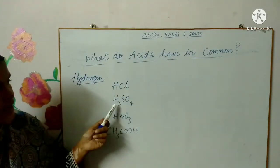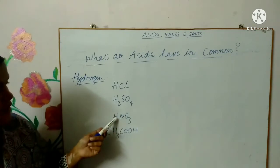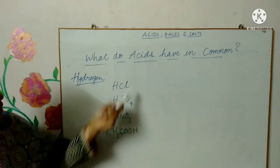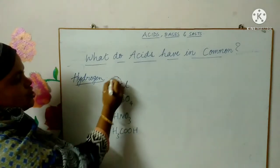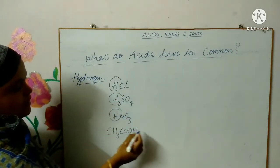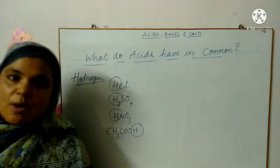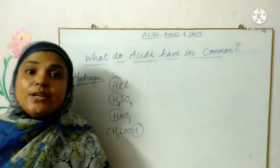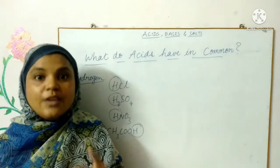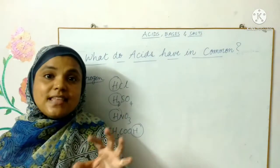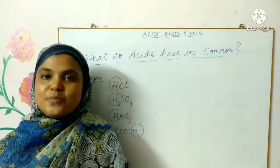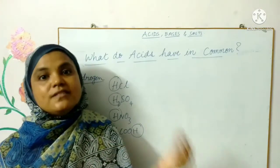If you see, all of these have hydrogen in common. Now what is an acid? In my previous video, I told you about the Arrhenius theory which stated that acid is a substance which generates or produces H+ ion. When dissolved in water, it dissociates and produces H+ ions in its solution.